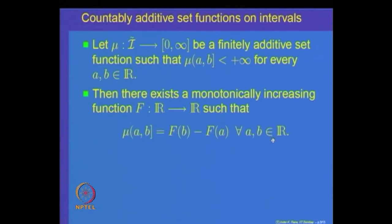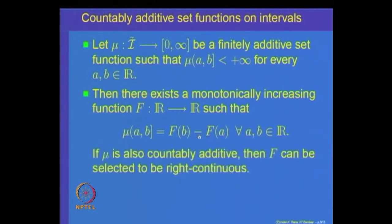The claim of the theorem is that there exists a monotonically increasing function f from R to R such that mu of (a, b] is given by f(b) minus f(a) for every a and b belonging to R. We want to show that given a finitely additive set function on the class of all left open right closed intervals, it must arise from a monotonically increasing right continuous function f.